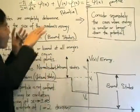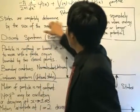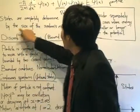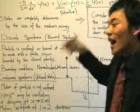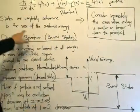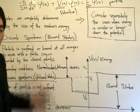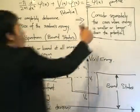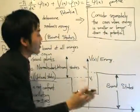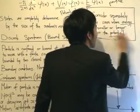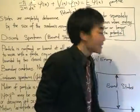The states — phi of X — are completely determined by the size of the system's energy. The system is the potential and the particle. Because of that, when solving the time-independent equation, we will consider separately the cases where the energy is smaller or larger than the potential. This energy is the energy of the particle, and this potential is what is given to us. That is our main methodology.